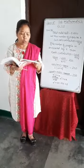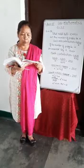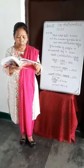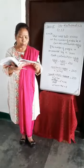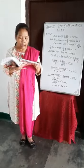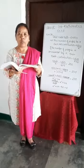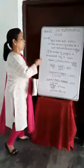The question is: the hotel bill for a number of people for overnight stay is Rs. 4800. If there were 4 more, the bill each person had to pay would have reduced by 200. Find the number of people staying overnight. Total hotel bill is equal to Rs. 4800. Let the number of people be X, so each one's contribution equals Rs. 4800 divided by X.